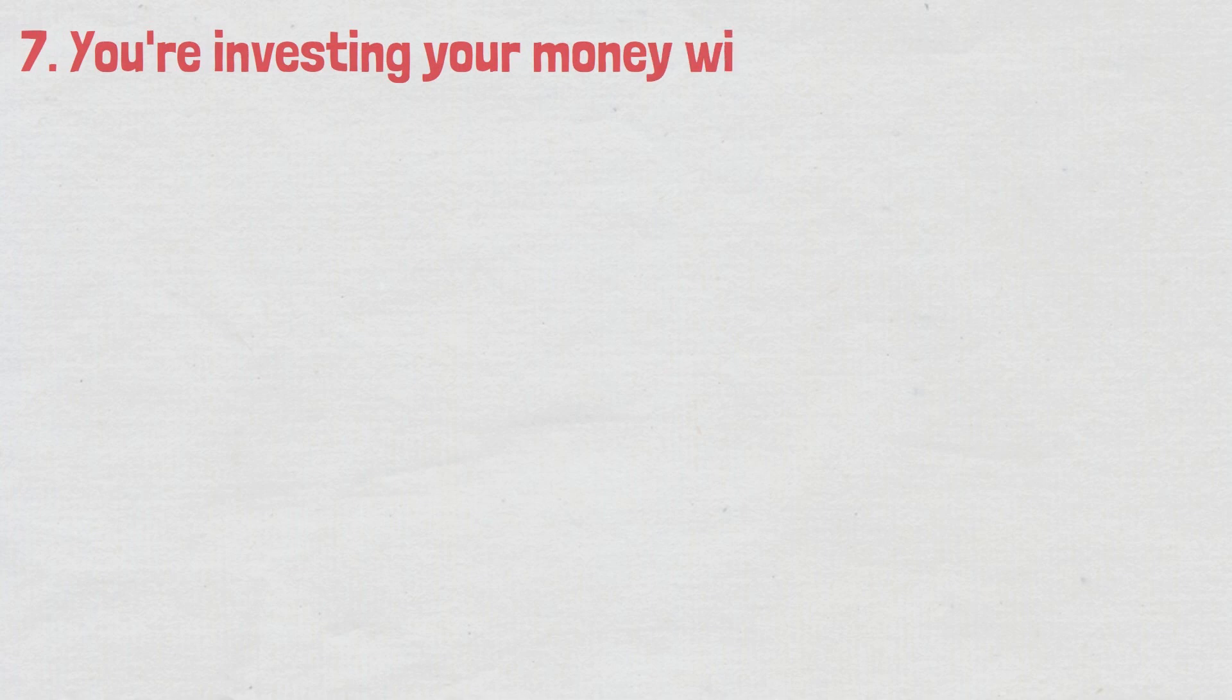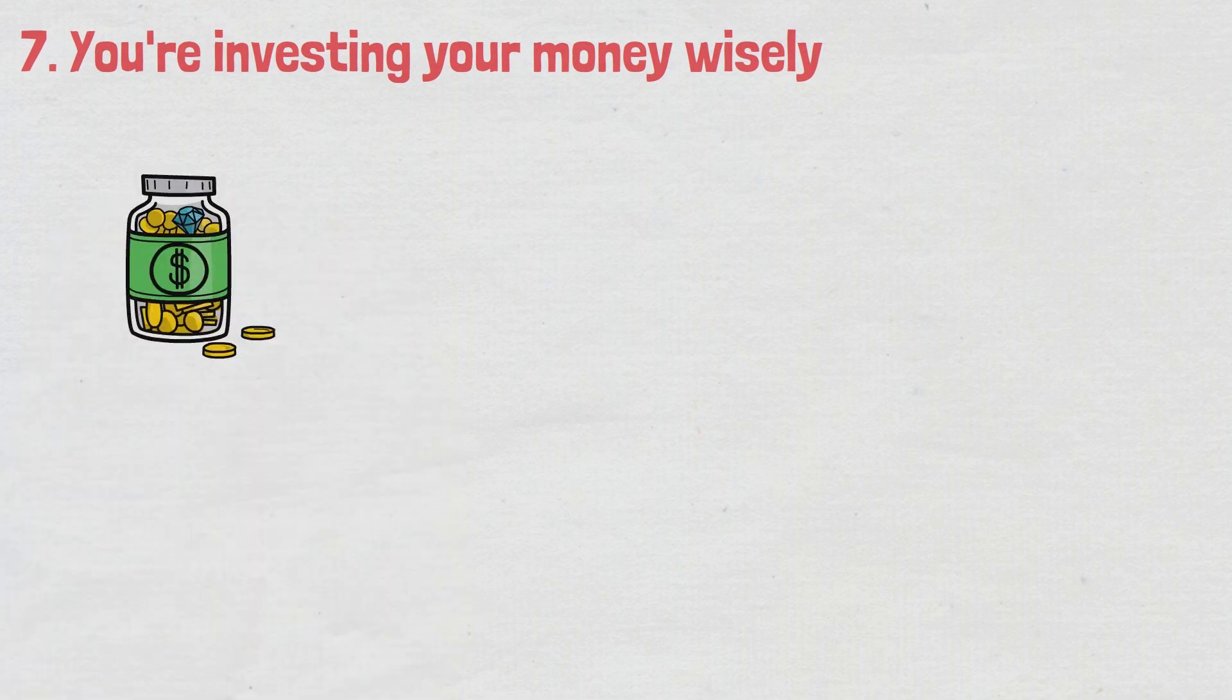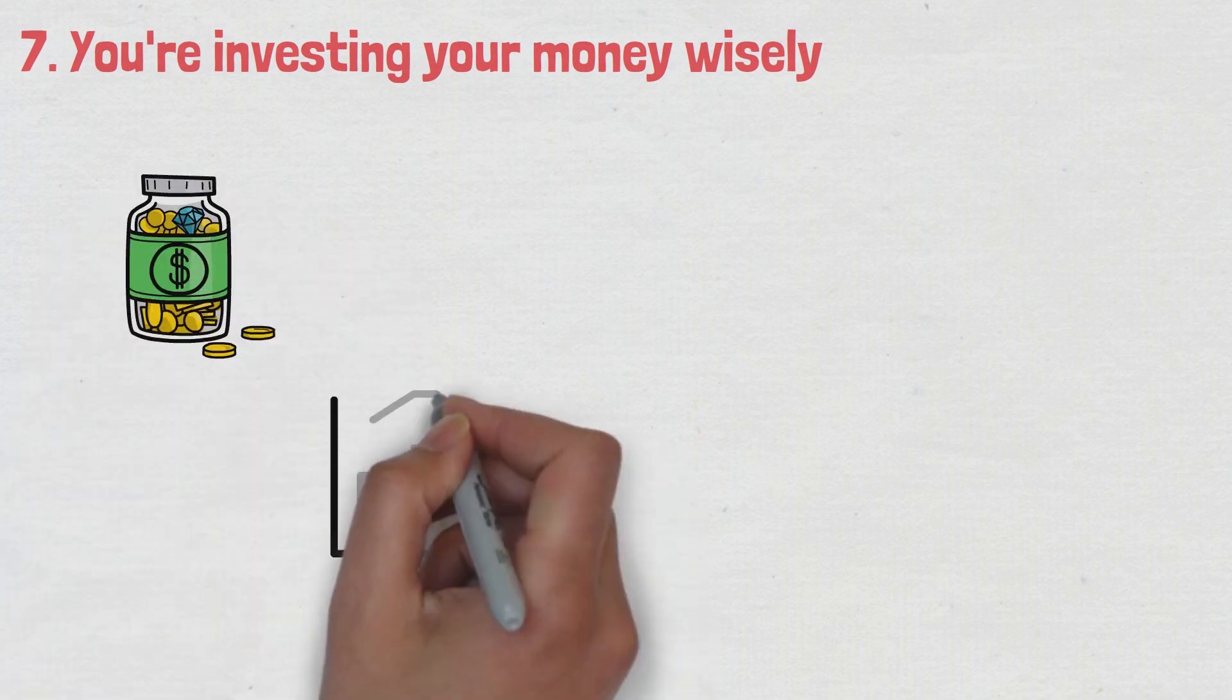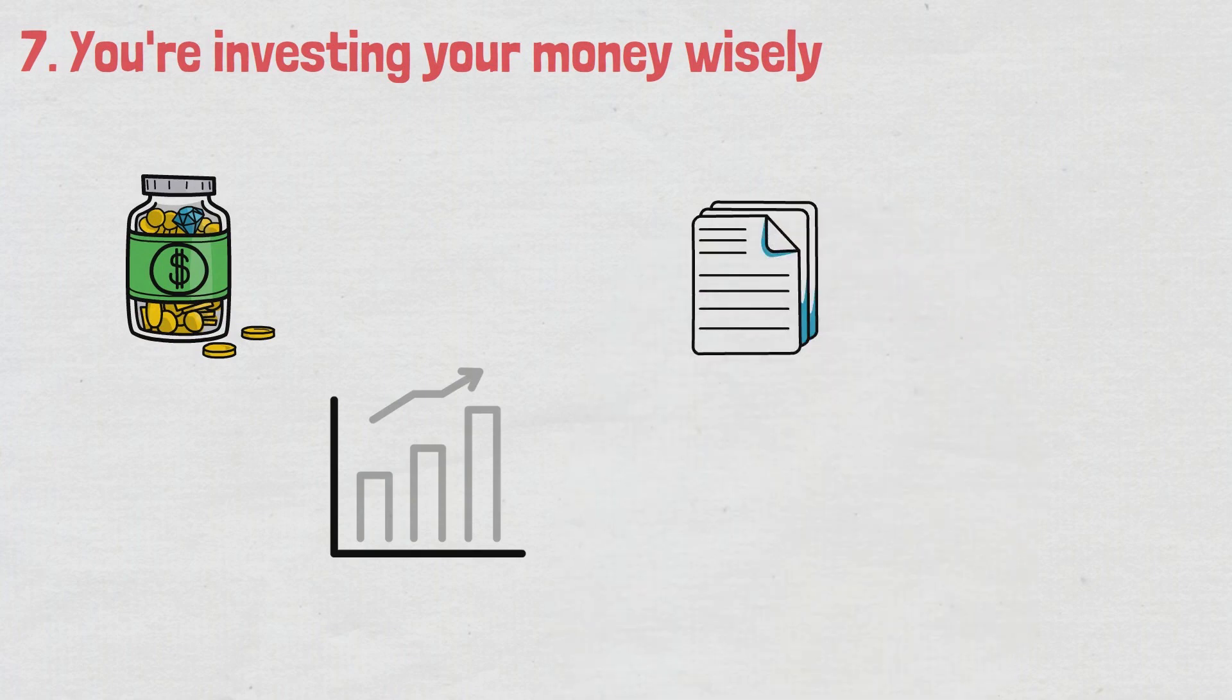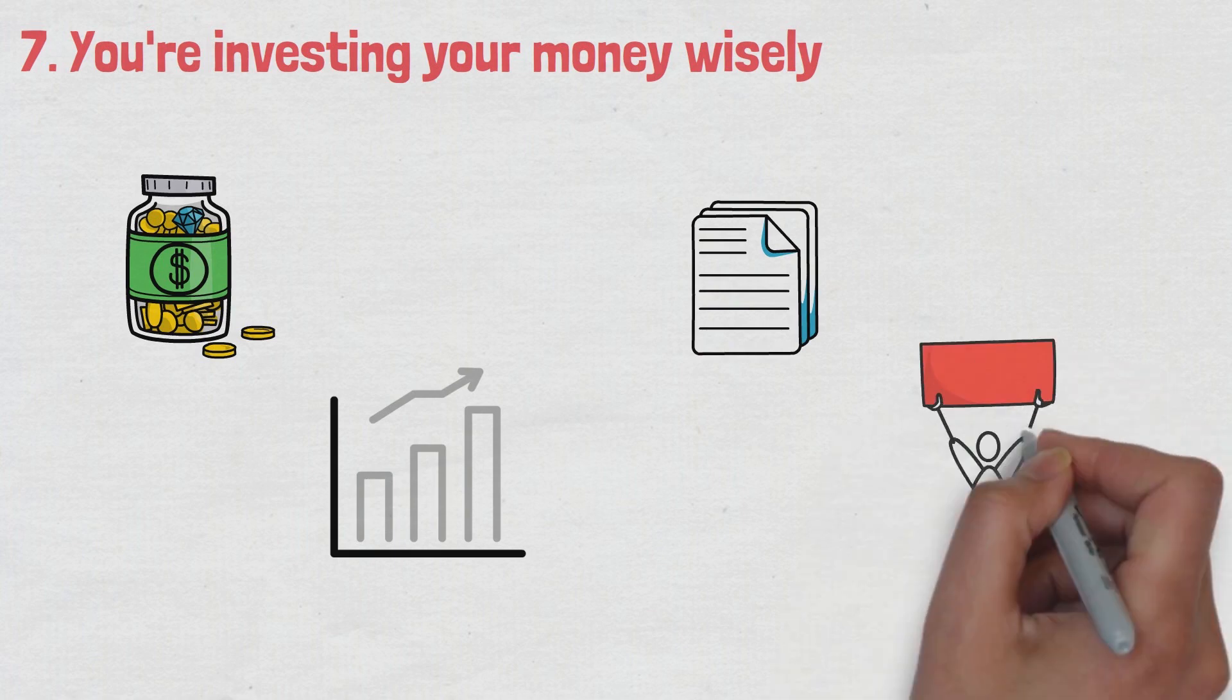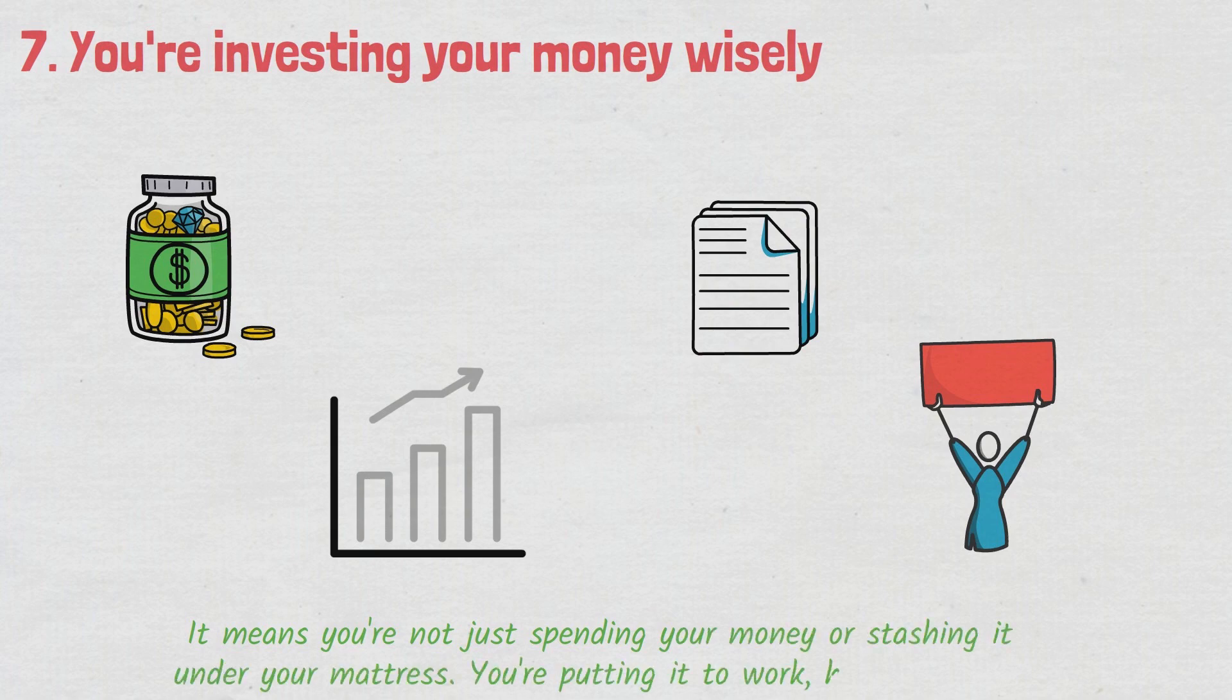Number seven, you're investing your money wisely. A strong sign that you're doing well financially? You're investing. Investing isn't just for the wealthy. It's a way to grow your money, no matter how much you start with. If you're buying stocks, bonds, mutual funds, or even a piece of real estate, you're an investor. It means you're not just spending your money or stashing it under your mattress. You're putting it to work, helping it grow.